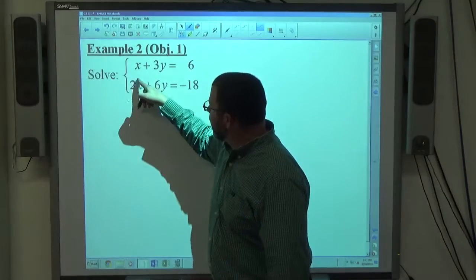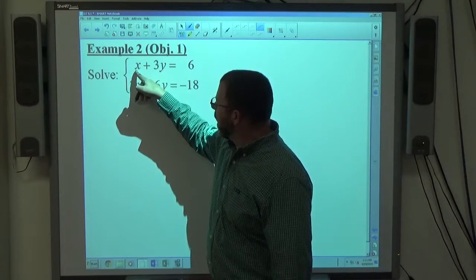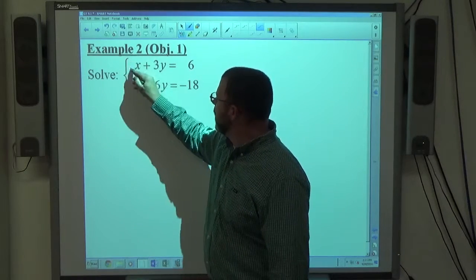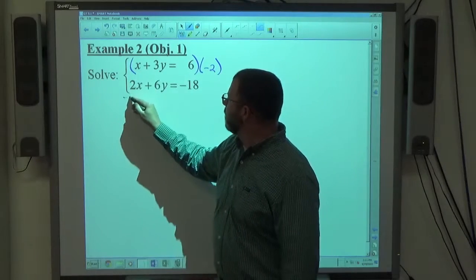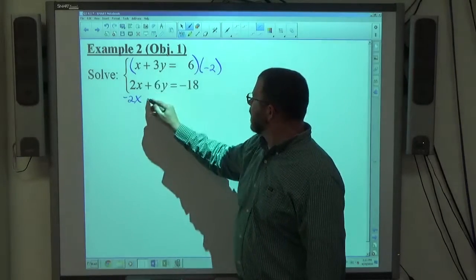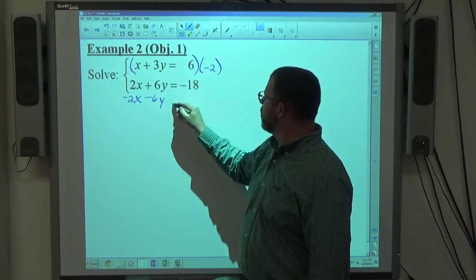So getting rid of x would be really easy. Just negative 2 times this will make negative 2x and positive 2x. So if I multiply the top equation by negative 2, I end up with negative 2x. I get minus 6y. I get equals minus 12.